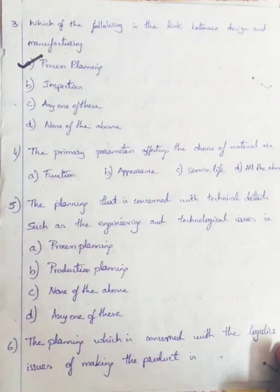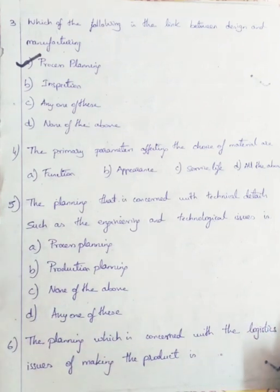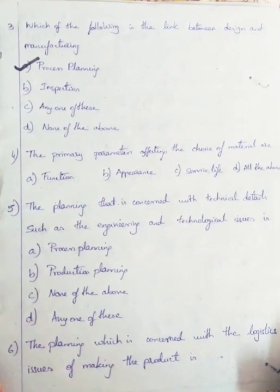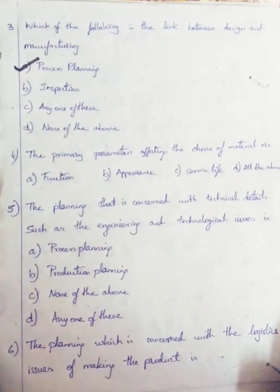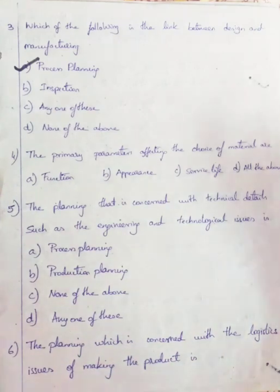Question 4: The primary parameters affecting the choice of material are Option A: Function, Option B: Appearance, Option C: Service Factor, Option D: All of the above. All are primary factors of choosing a material, so we'll go with All of the above.